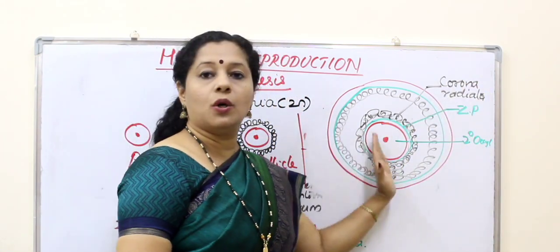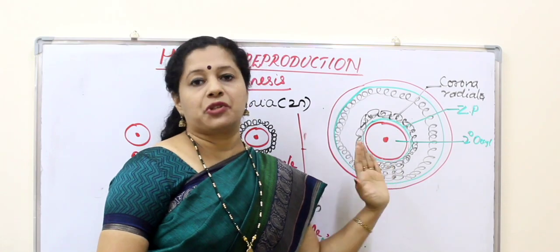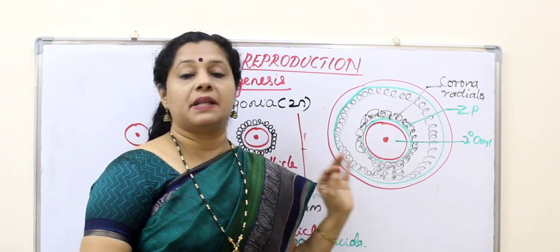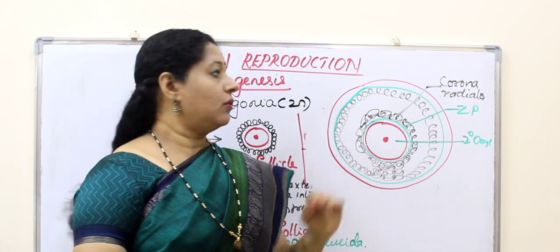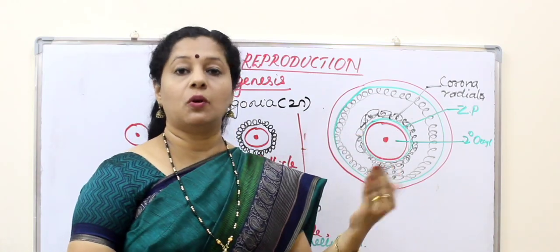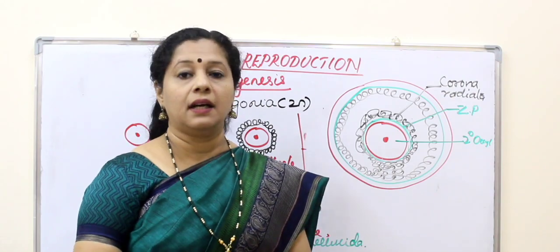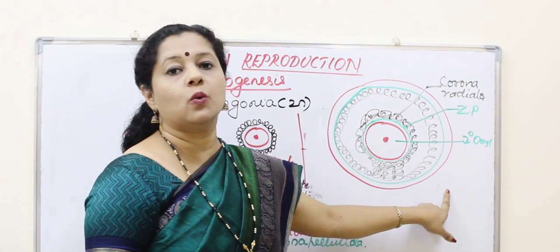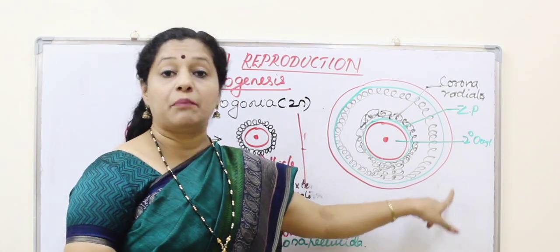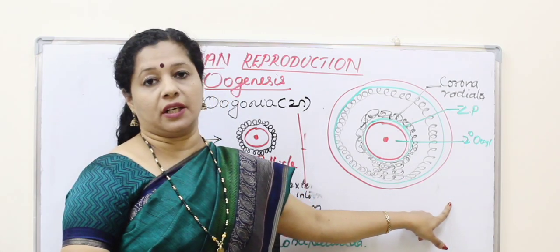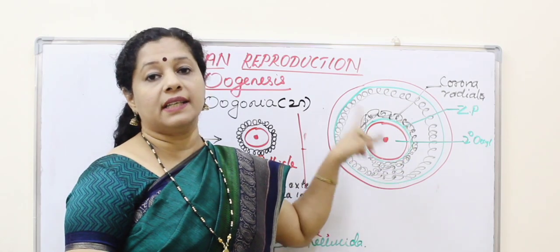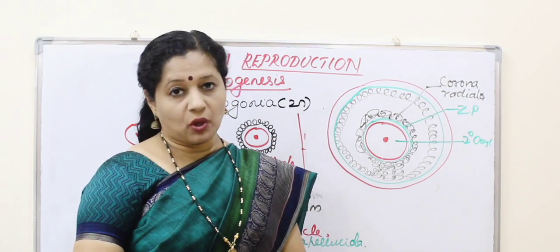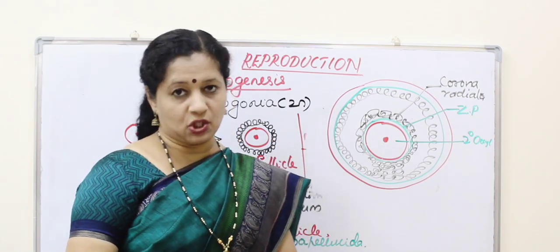This happens almost at the middle of the menstrual cycle — around the 14th day of a 28-day cycle. At that time the hormone LH will be at its peak, and as a result the Graafian follicle ruptures, releasing the secondary oocyte out. This process is called ovulation.